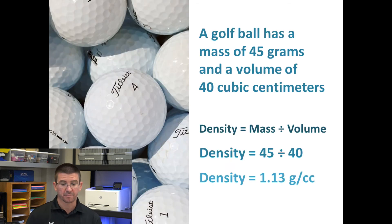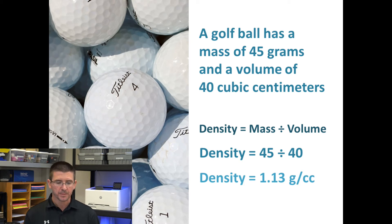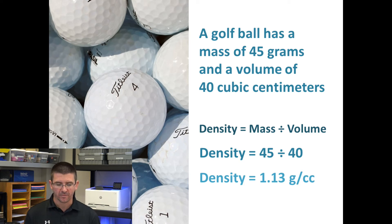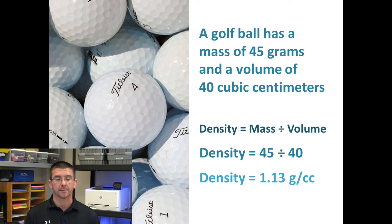For instance, a golf ball has a mass of approximately 45 grams and a volume of about 40 cubic centimeters. So we divide 45 by 40, which tells us the density of the golf ball is 1.13 grams per cubic centimeter.